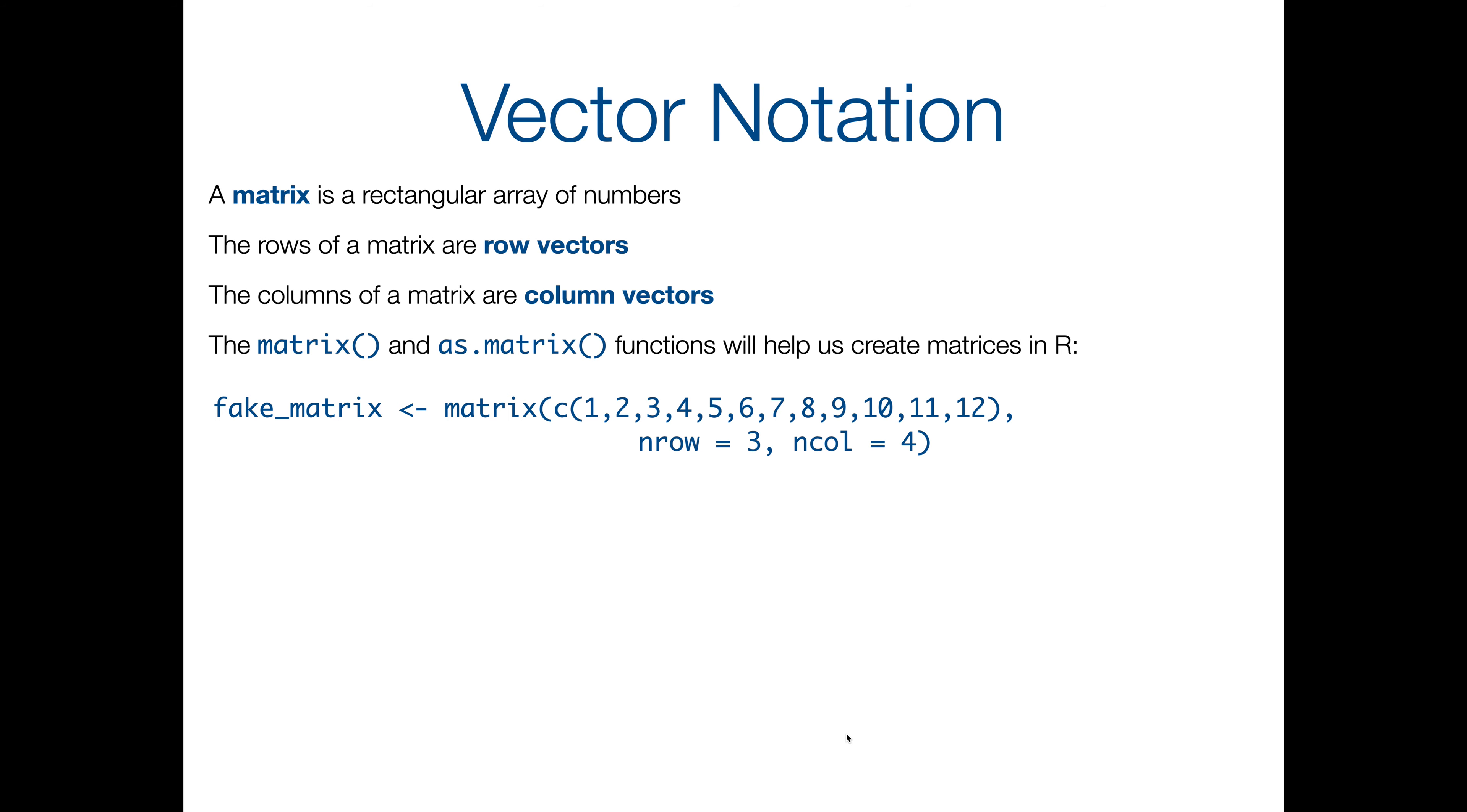So first what I do here is, the first argument is I create a vector, so C and then 1 comma 2 comma and so on. That creates a vector. So I've got the vector from 1 to 12, so I give it that. Then I tell it I want 3 rows and 4 columns. So that's gonna make a matrix, a 3 by 4 matrix for us, it's called fake matrix. And you might be wondering, okay 3 rows, 4 columns, great, how do I know which number is gonna end up where? Like how does it fill them in?